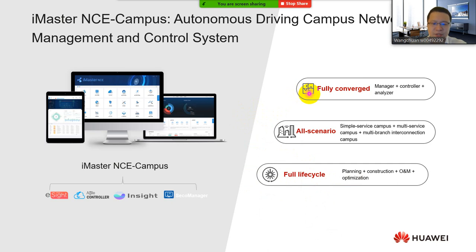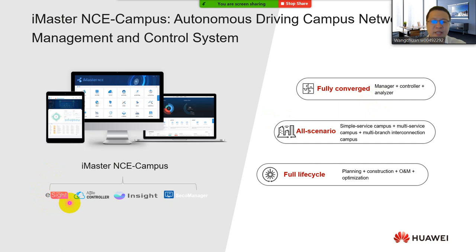iMaster NCE Campus is a fully converged solution, which means it is a unified platform that combines three components: Manager, Controller, and Analyzer. The Manager is the network management system — previously called eSight in Huawei — and is used to monitor the status of network devices. The Controller handles orchestration and automation.